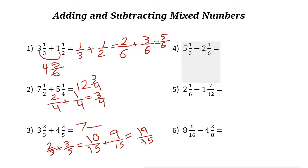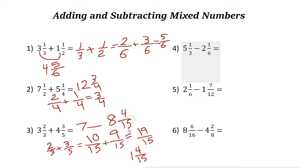The numerator nineteen is bigger than the denominator fifteen, so this is an improper fraction — we need to turn it into a mixed number. Divide nineteen by fifteen: you get one with a remainder of four, so one and four-fifteenths. We also have a whole number of seven, so seven plus one is eight. The final answer is eight and four-fifteenths.